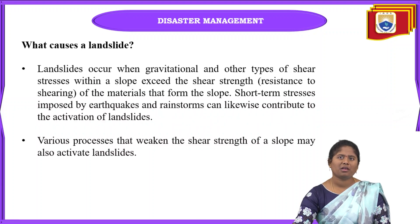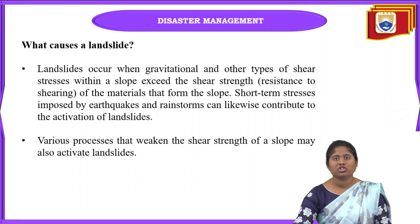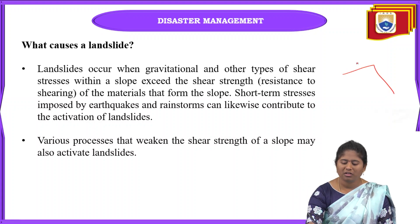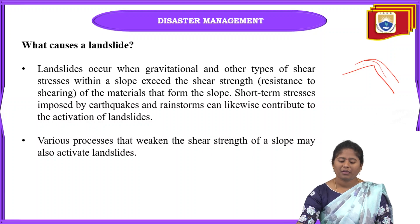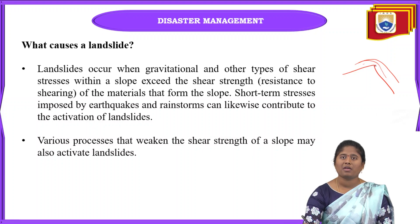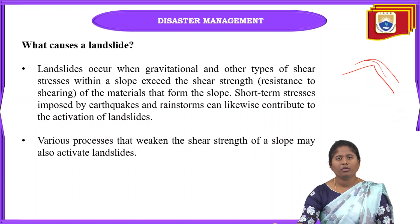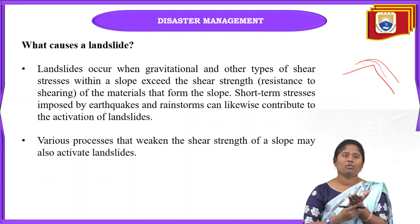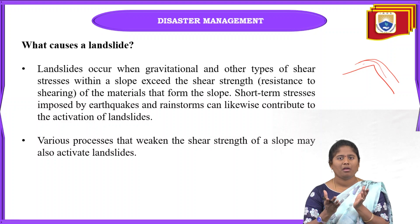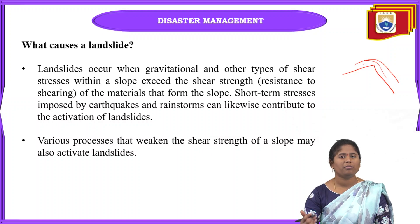Landslides occur due to gravitational and shear stresses within the slope. Short-term stresses from earthquakes or rainstorms can trigger these landslides. When earthquakes occur, rocks become unsettled and displaced, giving rise to landslides. Similarly, when heavy rainstorms occur at the tops of mountains, debris, earth, rocks, and soil roll down from the mountainous region due to these gravitational and shear stresses within the slope.